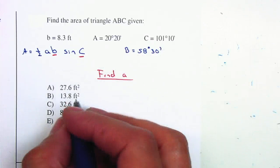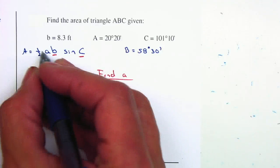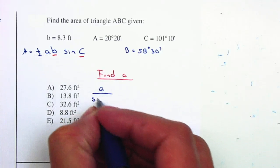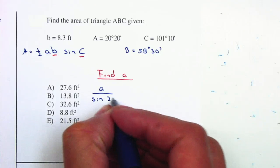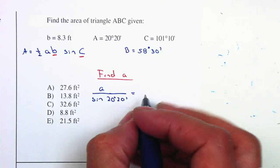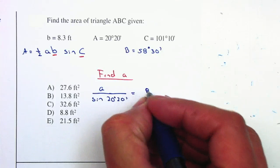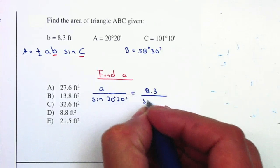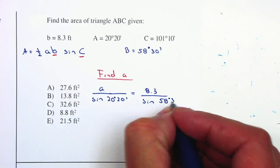Now let's use the law of sines. We're looking for A. A over sine of A, which is 20 degrees 20 minutes, equals B, 8.3, over sine of B, which is 58 degrees 30 minutes.